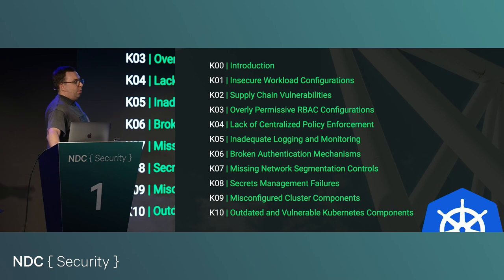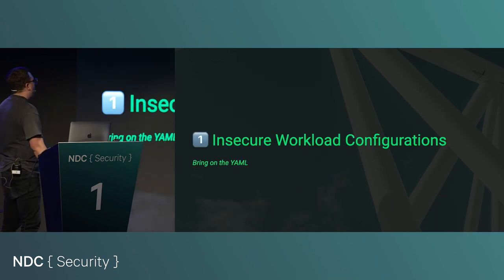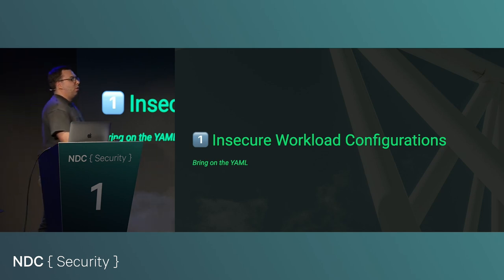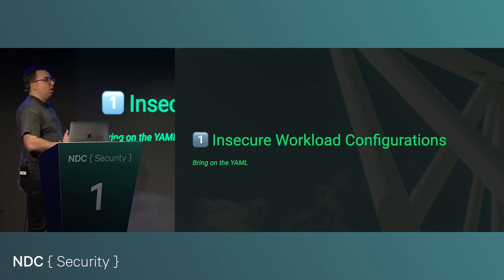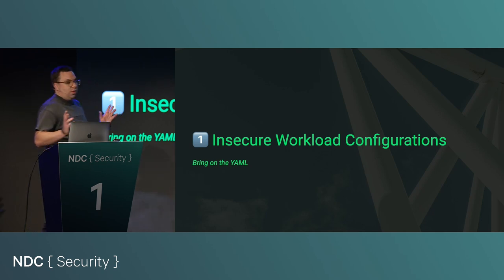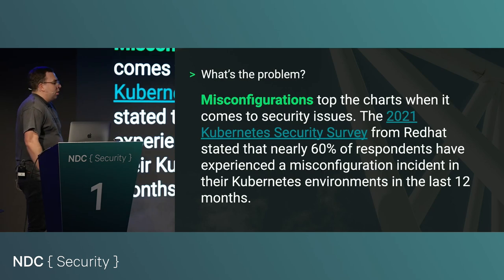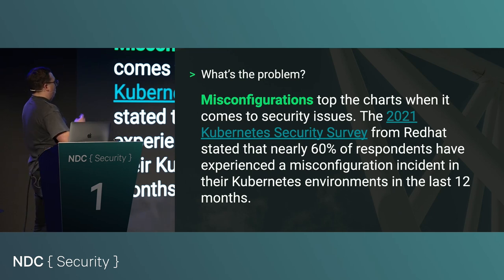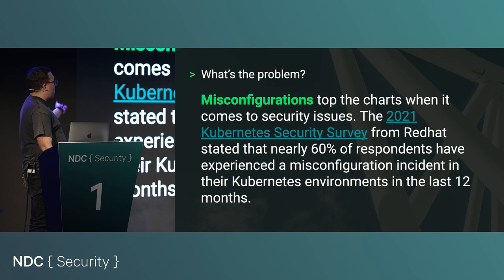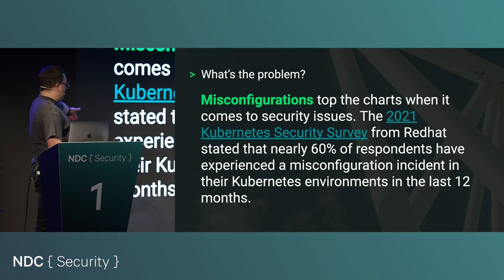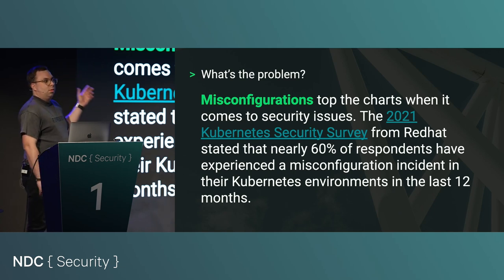We're going to start with insecure workload configurations — there is some YAML in this talk. The Red Hat Kubernetes security survey from 2021 stated that 60% of respondents experienced a misconfiguration incident in their Kubernetes cluster in the last 12 months. That's a pretty big problem, and it's why it's number one.